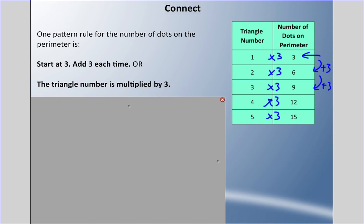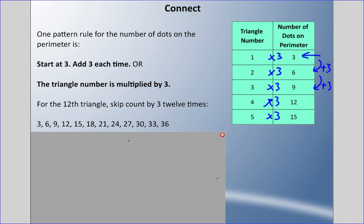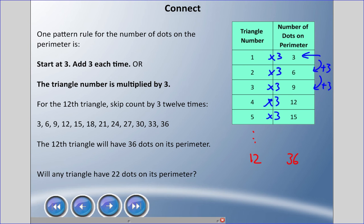The original question was: what's the twelfth triangle? If we're going to do the twelfth triangle, we can skip count by three twelve times. I wrote those out here - we have three, six, nine, twelve, fifteen, eighteen, twenty-one, twenty-four, twenty-seven, thirty, thirty-three, and thirty-six. That's twelve skip counts, so the twelfth triangle will have thirty-six dots on its perimeter.